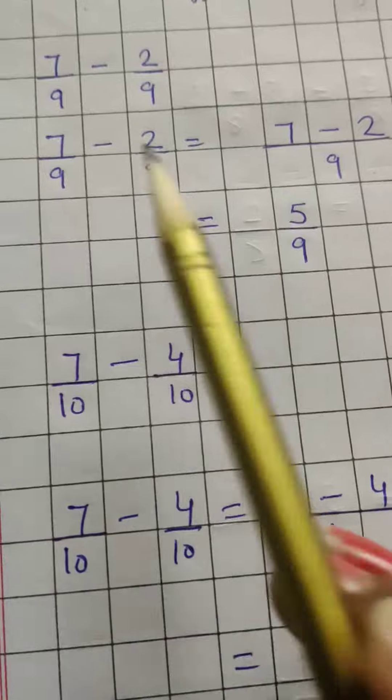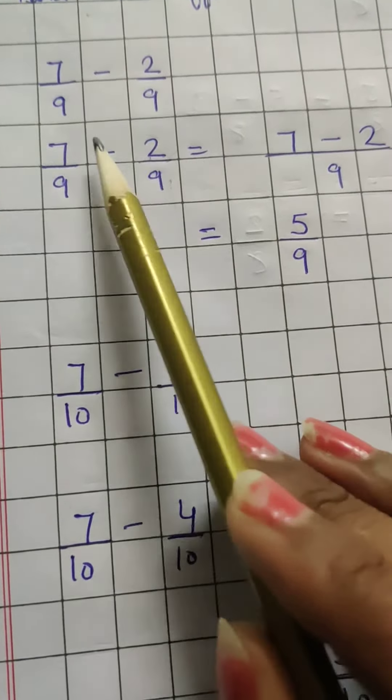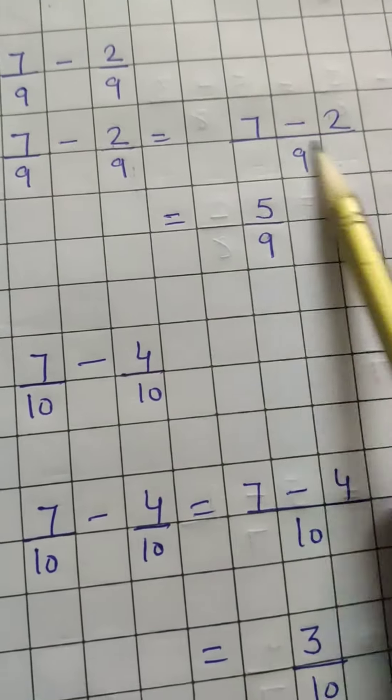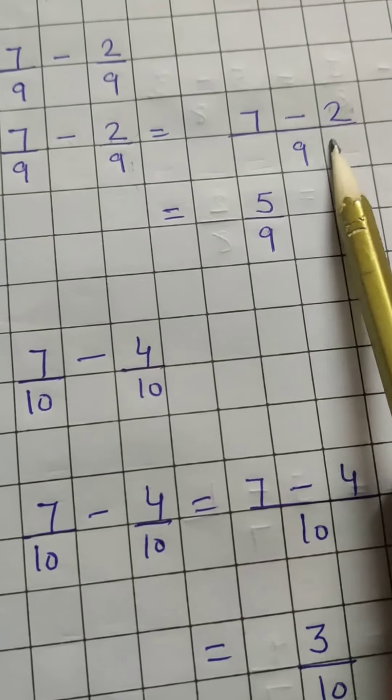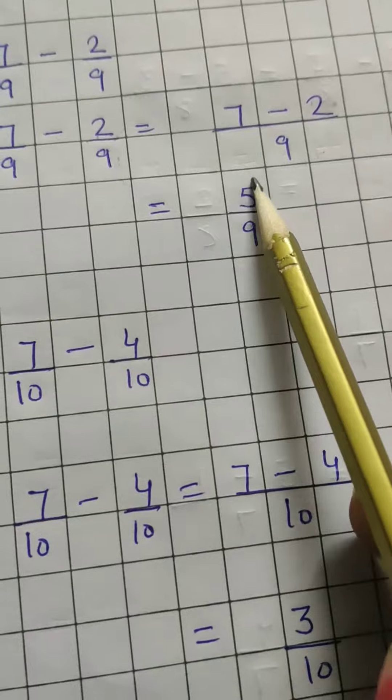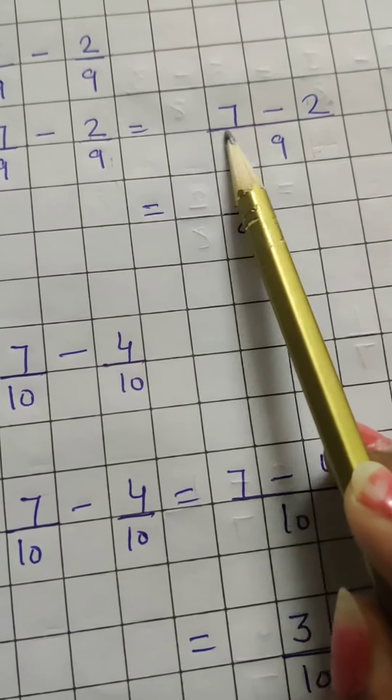So here, seven minus two in the numerator. Seven minus two happens over nine. So in the numerator we have seven minus two, completely over nine. Seven minus two becomes five, five by nine. Keep in mind that it's complete over nine. Don't leave it incomplete. So five by nine.